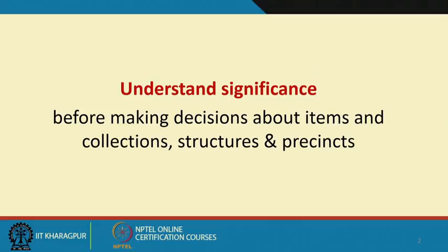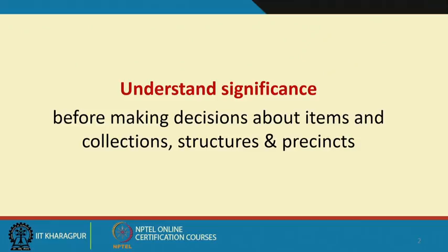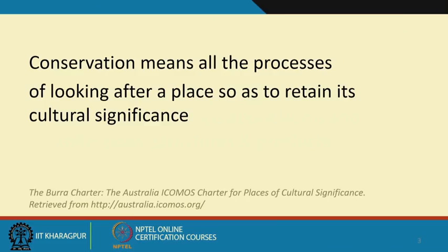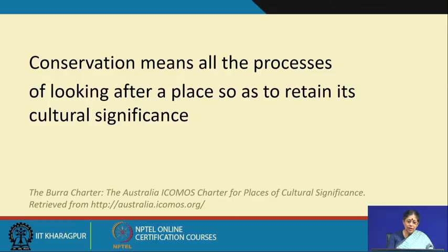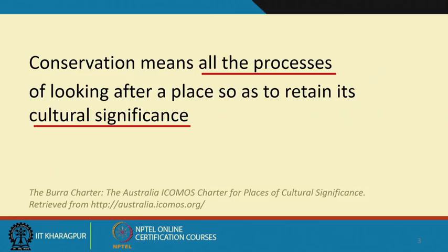In our last lecture, we discussed understanding significance and also discussed various case studies. The example was that before making decisions about items, collections, structures, and precincts, we have to understand significance. We discussed values, significance, and the entire process. Conservation means all the processes of looking after a place so as to retain its cultural significance. There are many divergent approaches, and the main objective is to retain cultural significance.